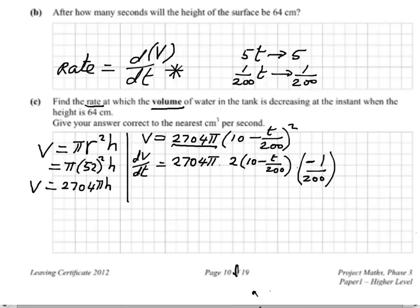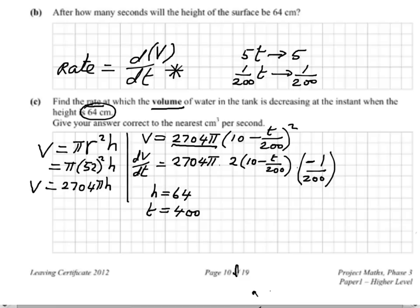One last step — he wants the rate at which volume is decreasing when the height is 64. We need to put h equals 64 into our rate equation, but we only have t in the equation. We need a connection between t and h — and if the height is 64, we worked out in the previous part that the time was 400 seconds.